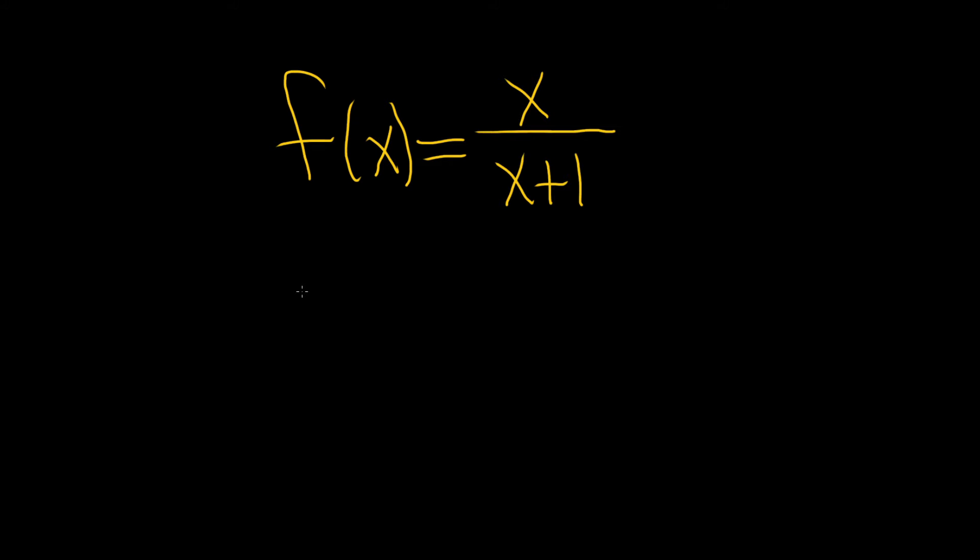The first step when you're looking for holes and vertical asymptotes is to simplify first, if possible. Any simplification in a rational function, like cancellation, will give you a hole. There's nothing to simplify here, so there are no holes.